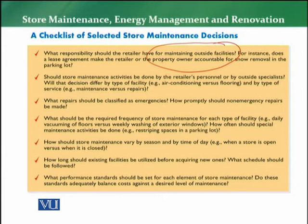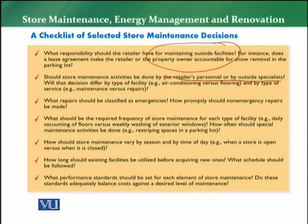Doosri important baat jo checklist ke andar store maintenance decisions mein aati hai — store maintenance activities to be done by retailer's personnel, ya it should be from a third party, which means from outside specialists. Aapko ye bhi dekhna hai ke maintenance activities korn karega. For example, pest management activities — jo outside ya inside store facility ke andar aati hain — woh pest control activities sari ki sari done by a third party, outsource party. Toh retailer ne decide karna hai ke ye kaam khud karna hai ya kisi third party ko dena hai.